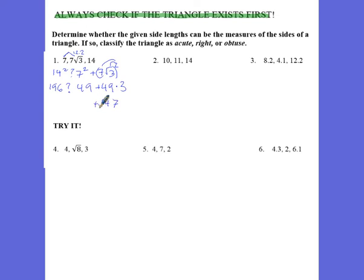And so now when I add these two together, 49 plus 147, that is equal to 196. So we can say 196 equals 196. So problem number 1 is a right triangle because the two numbers were equal.